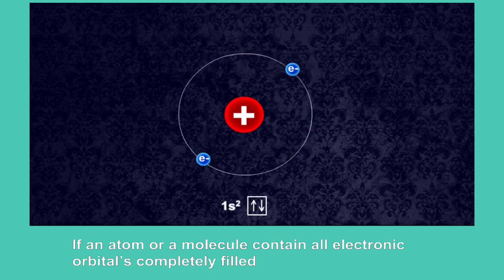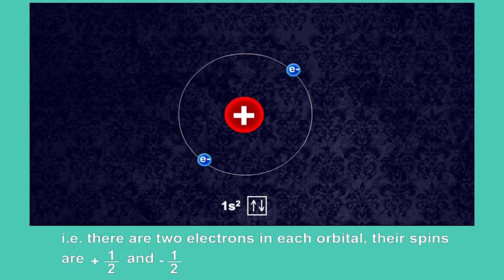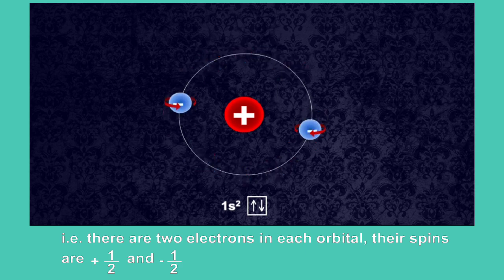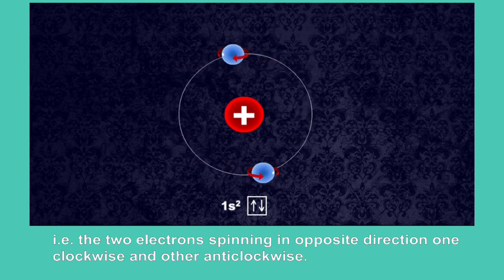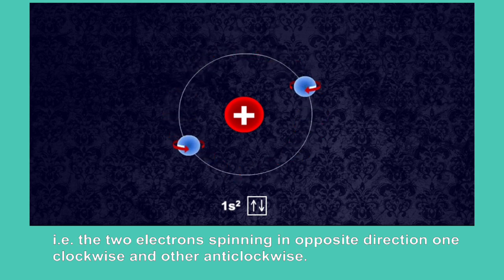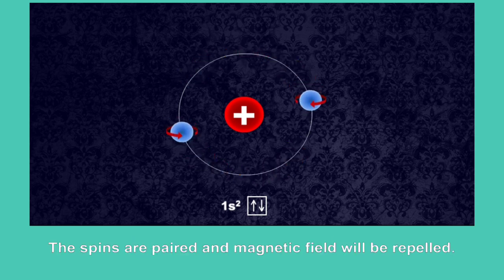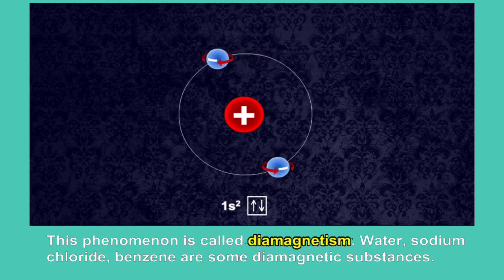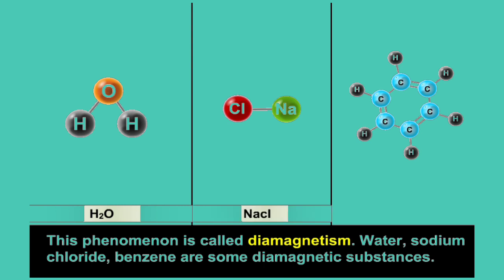If an atom or molecule contains all electronic orbitals completely filled — that is, there are two electrons in each orbital — their spins are plus half and minus half. That is, the two electrons spin in opposite directions, one clockwise and the other anticlockwise. The spins are paired and the magnetic field will be repelled. This phenomenon is called diamagnetism.